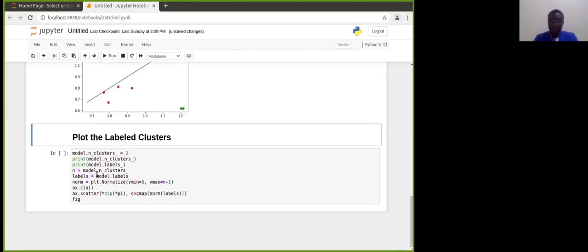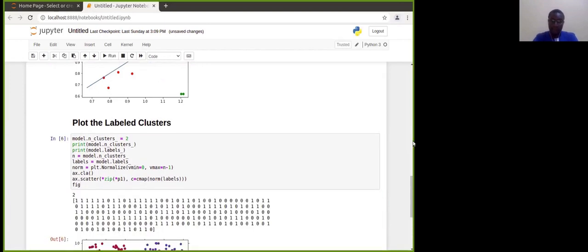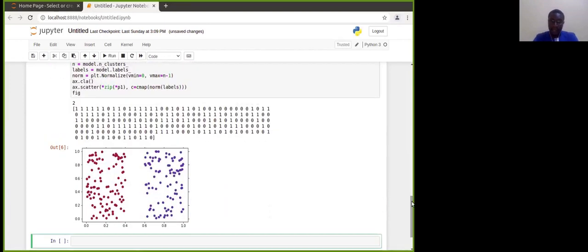Let us now plot the labelled clusters. We can clearly see that we have the two clusters that are labelled with different colours.